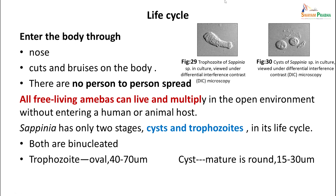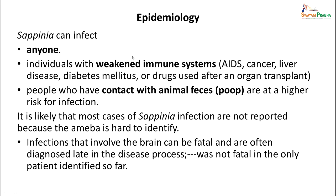The organism has two forms: a trophozoite form and a cyst form. They enter the body through the nose or cuts and bruises on the body, but there is no person-to-person spread. All free-living amoebae can live and multiply in the open environment without entering a host. Both stages are binucleated - the trophozoite is oval, 40 to 70 microns, while the cyst is mature and round, 15 to 30 microns in diameter. Sappinia can infect anyone - both persons with weakened immune systems and those with healthy immune systems are susceptible, especially those in contact with animal feces. Most cases are likely not reported because the amoeba is hard to identify. Infections involving the brain can be fatal and are often diagnosed late.